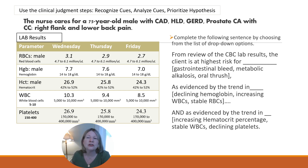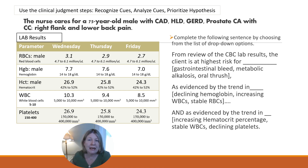On the right screen you'll get your test question: complete the following sentence by choosing from the list of drop-down options. From review of the CBC lab results, the client is at highest risk for — is it gastrointestinal bleed, metabolic alkalosis, or oral thrush? As evidenced by the trend in — is it declining hemoglobin, increasing white blood cell count, or stable red blood cells?